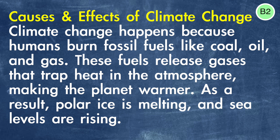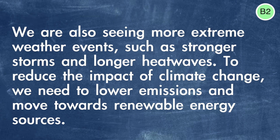So this is B2 level because we've got more advanced vocabulary — phrases like 'release gases that trap heat' or 'extreme weather events.' The grammar also becomes more complex, with phrases like 'as a result' or 'we are also seeing.' The text starts to talk about both causes and effects, which is more difficult than just stating facts. It also gives more information about the effects of climate change like stronger storms and heat waves, and asks the reader to think about solutions like lower emissions. B2 is usually quite a big step up for people in both grammar, vocabulary, and the complexity of ideas.